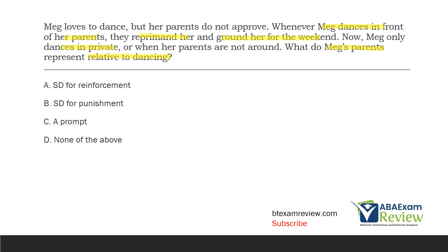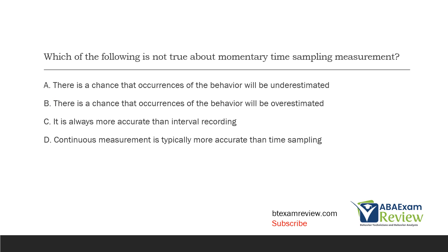Answer C — a prompt — they're not prompting her to do anything; they're just signaling that if she dances, they will punish her. Answer D — none of the above — obviously not. Answer B is the best answer. You need to understand what an SD — a discriminative stimulus — is: it's our antecedent, it evokes behavior, and it signals consequences are available. Consequences can be reinforcement or punishment. SDs can signal either, depending on the scenario and learning history. Meg has learned her parents will punish her if she dances, so they've become SDs for punishment.